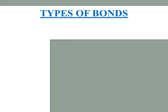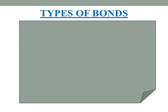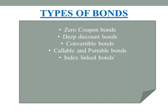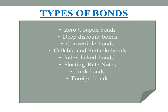The various types of bonds include zero coupon bonds, deep discount bonds, convertible bonds, callable and putable bonds, index-linked bonds, floating rate notes, junk bonds, foreign bonds, and public sector undertaking bonds.